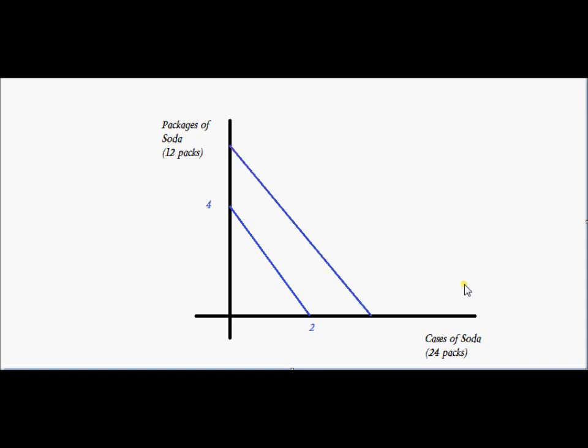We could actually draw another indifference curve. All of the indifference curves will look like this. They'll be downward sloping with a slope of negative two. For example, I'd be indifferent between five packages of soda and two and a half cases of soda. Each would give me 60 cans of soda.